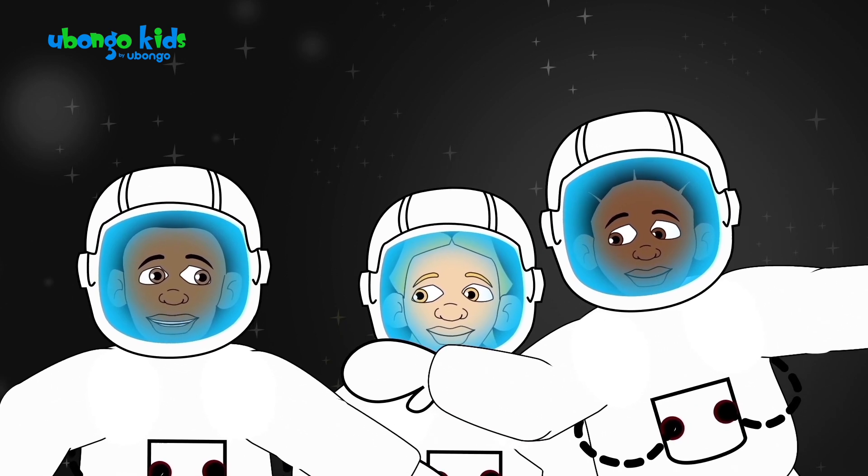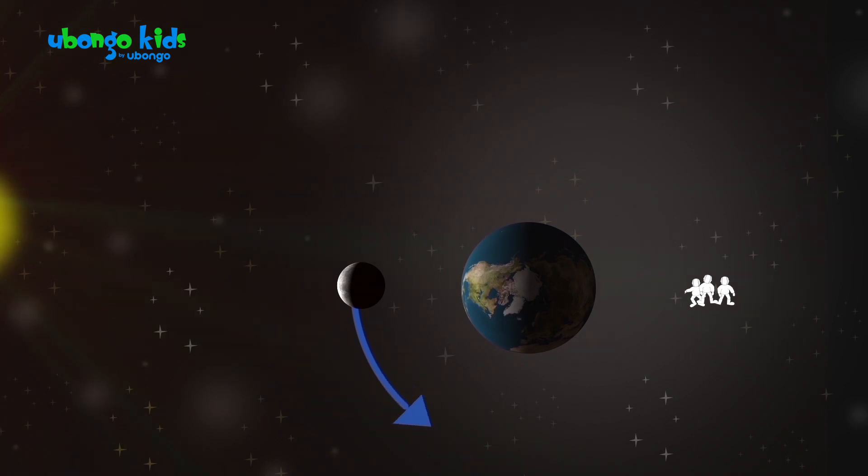Right! The moon orbits the Earth, which means that it is constantly moving around the Earth. So if we can't see the moon right now, that must mean it's on the other side of the Earth from where we are.